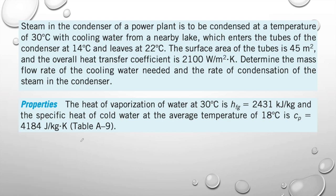Let's look at the question. Steam in a condenser of a power plant is to be condensed at a temperature of 30 degrees Celsius, with cooling water from a nearby lake which enters the tubes at 14 degrees Celsius and leaves at 22 degrees Celsius. The surface area of the tubes is 45 square meters, and the overall heat transfer coefficient U is 2100 W/m²·K. We are asked to determine the mass flow rate of the cooling water and the rate of condensation of the steam.